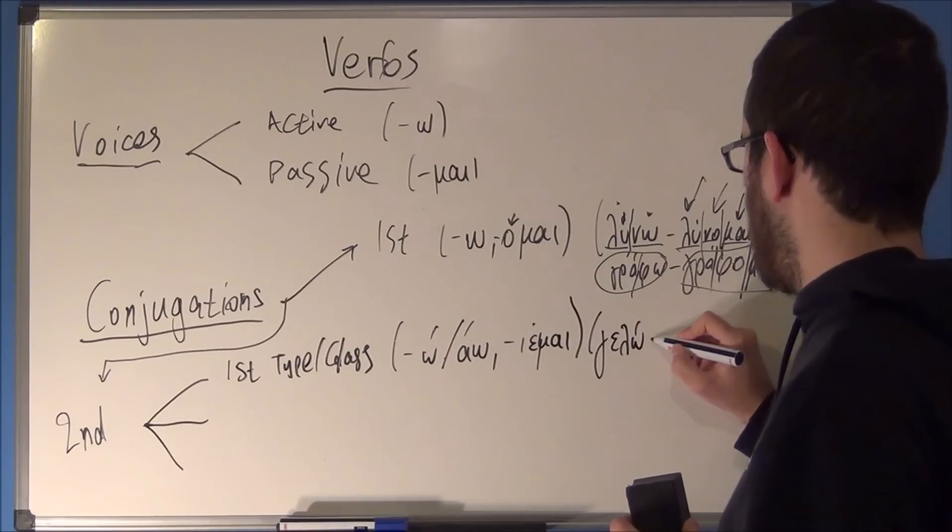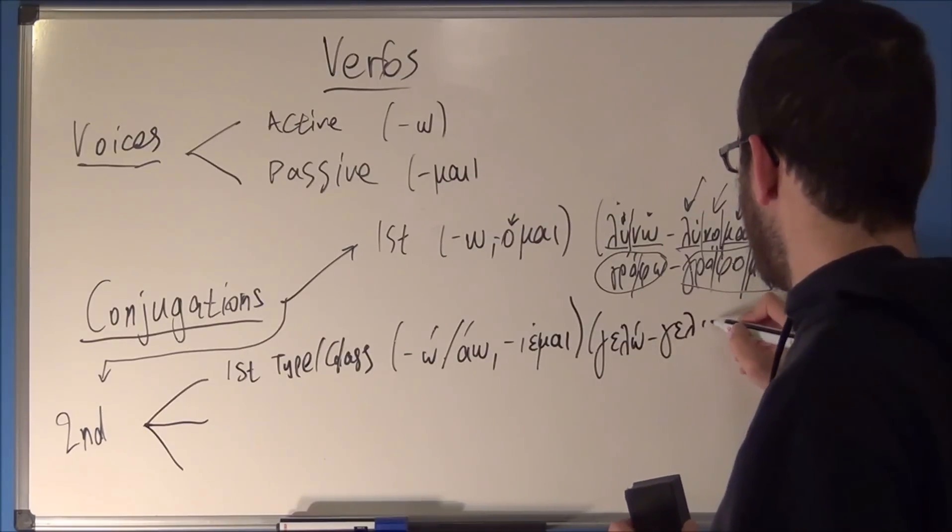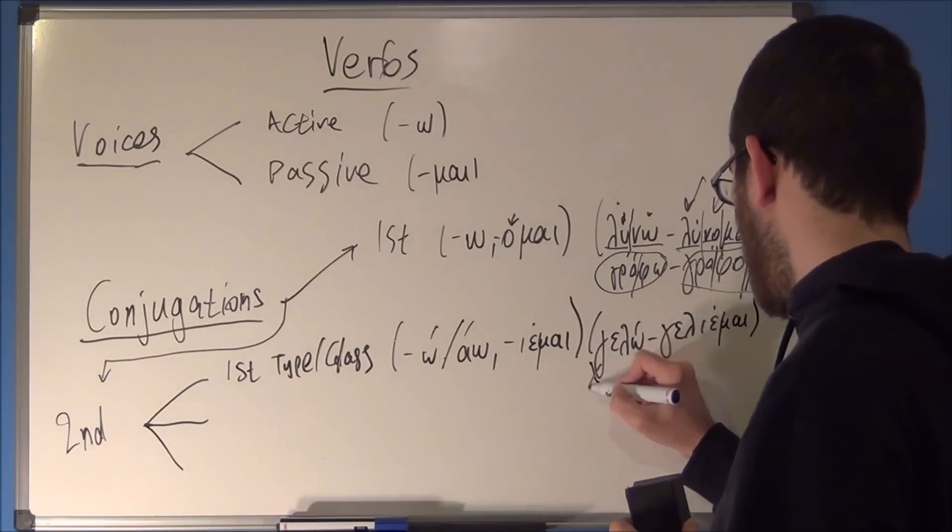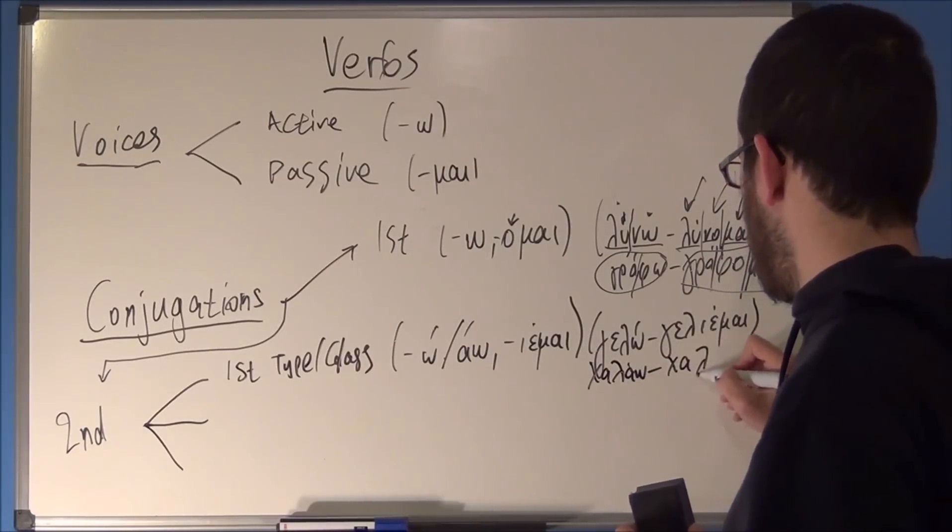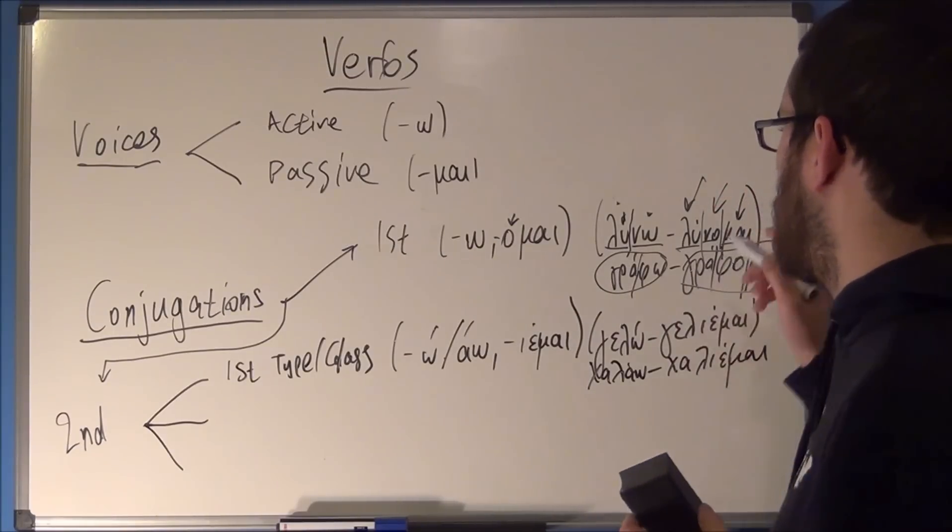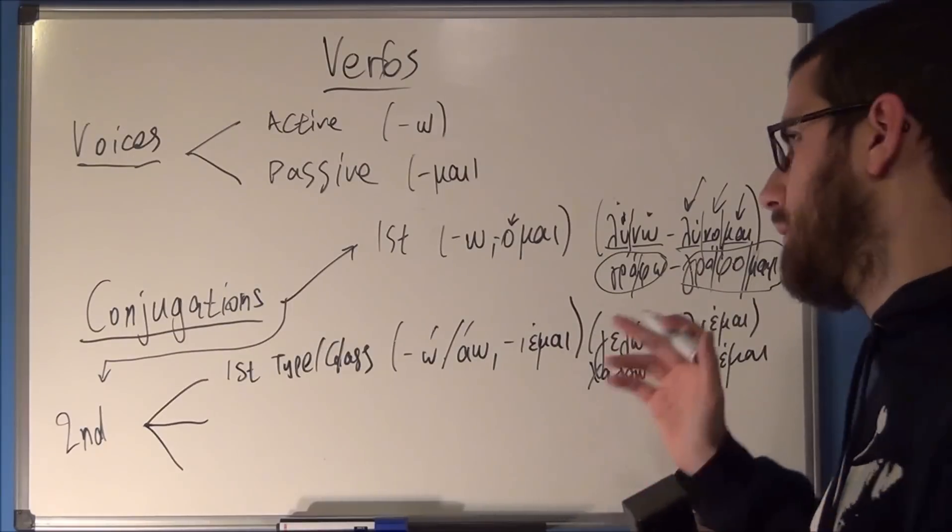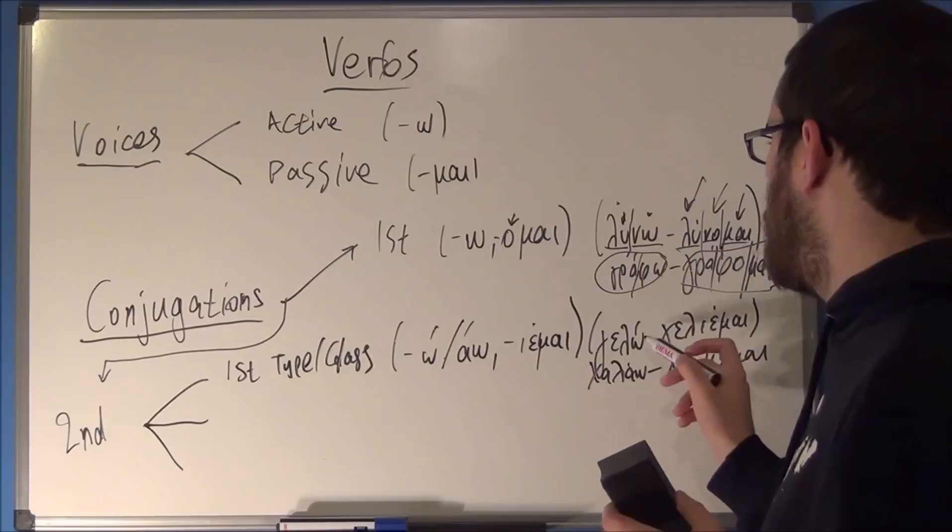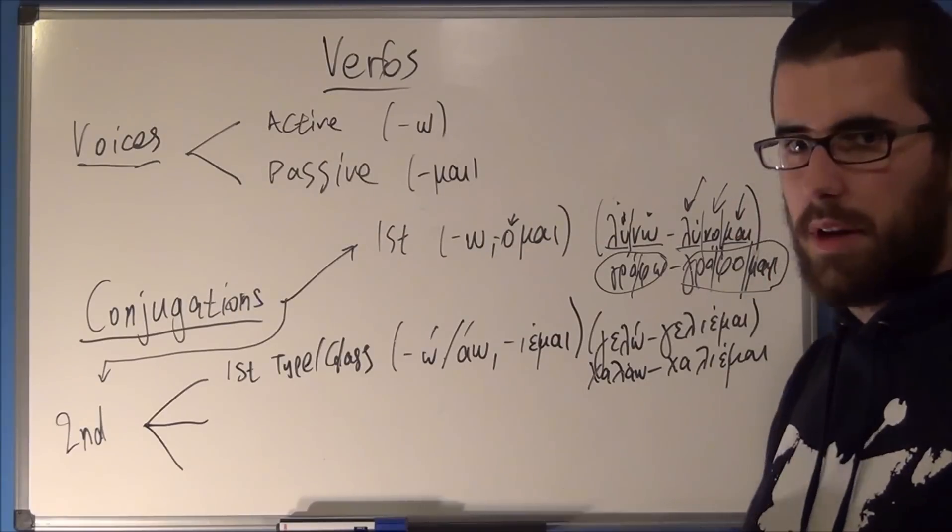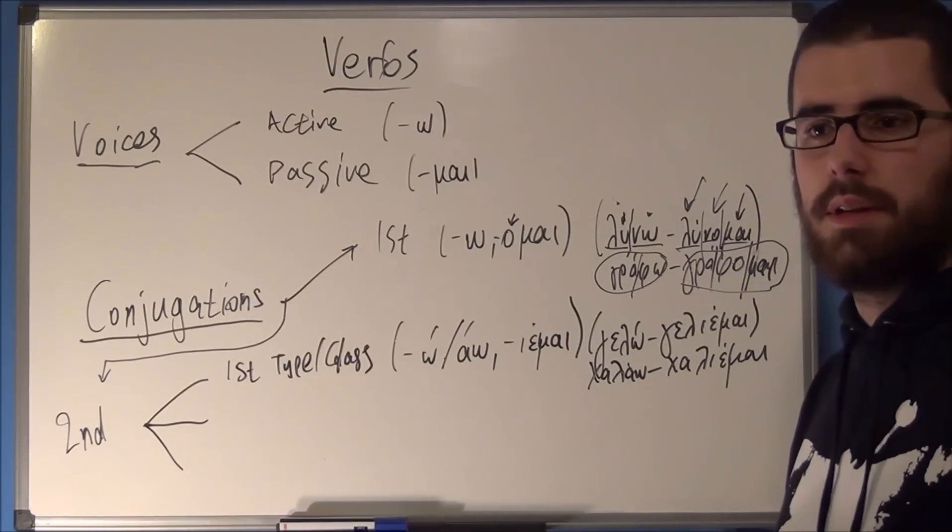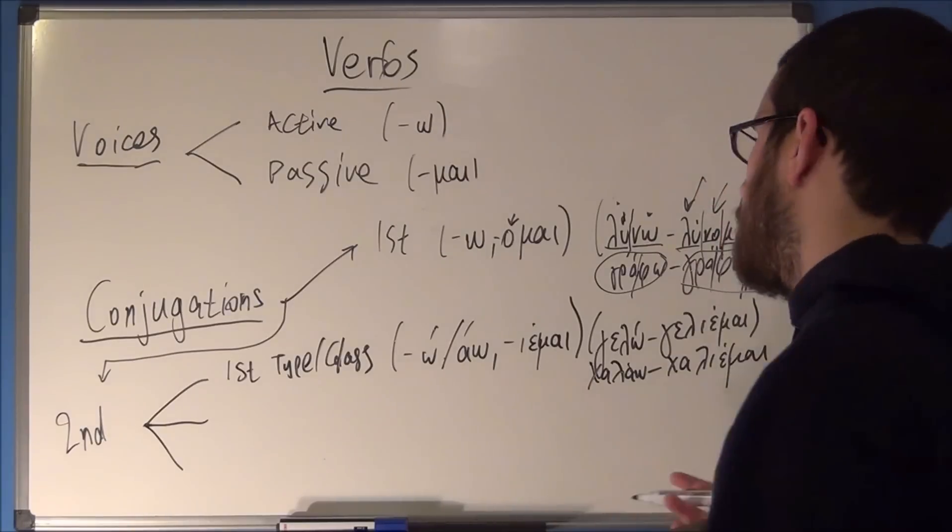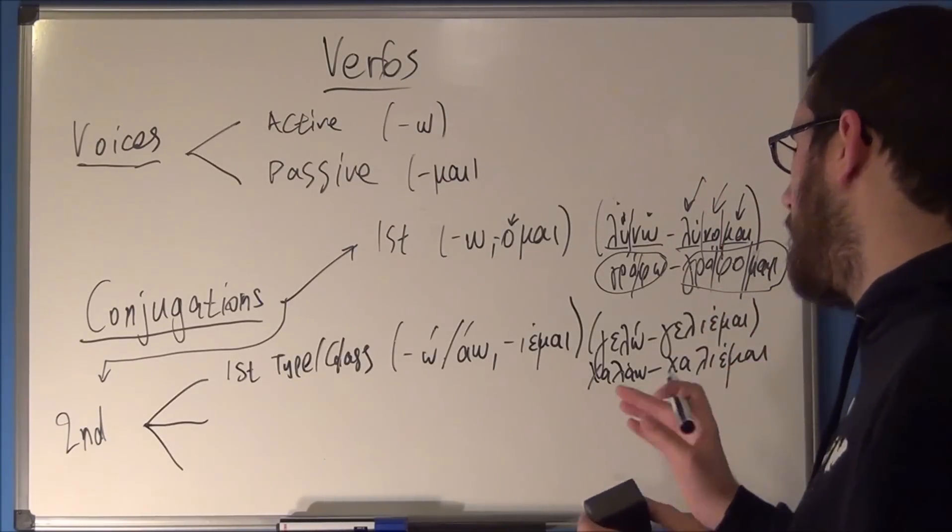These examples are GELO, GELAME, CHALAO, CHALAMAI. These are not exactly identical meanings. I forgot to say that before. Lino is to solve, to untie, I said that. Grafo is to write, gelo is to laugh, and chalao is to break something, but not break as in break it in half or something. It's to make something go wrong, render it not working, not functional.